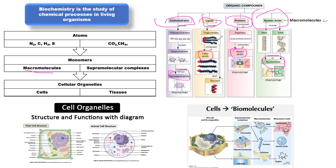Macromolecules also join together to form what we call supramolecular complexes. An example of supramolecular complexes is a virus. A virus is considered not a complete living organism, but it possesses characters of both living and non-living organisms. Remember from the basic theory of the cell that there is no life apart from the life of the cell.